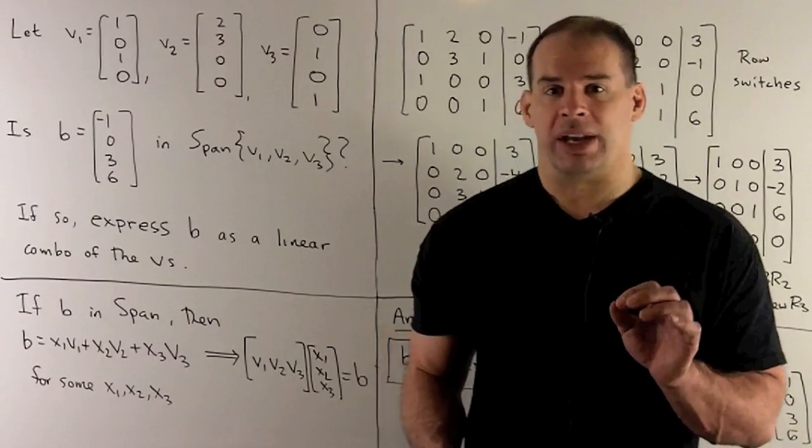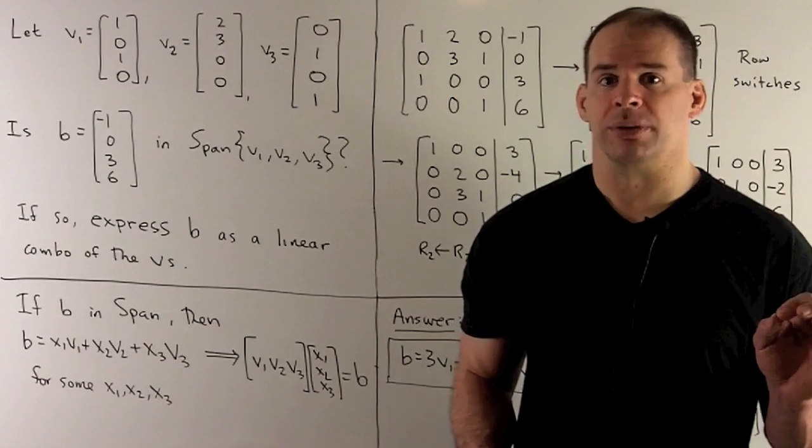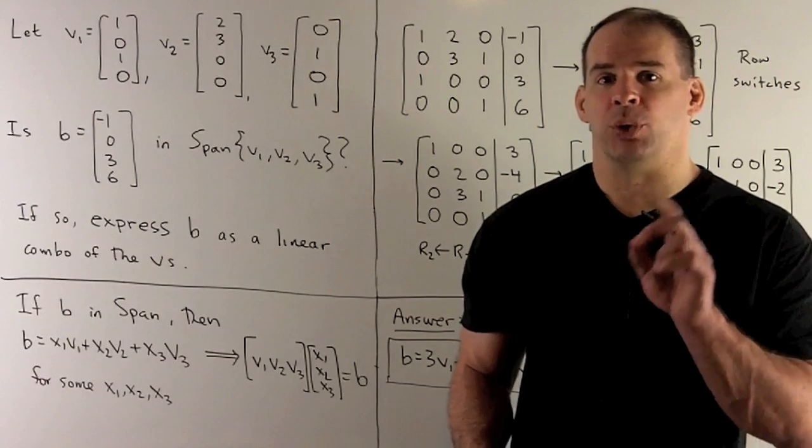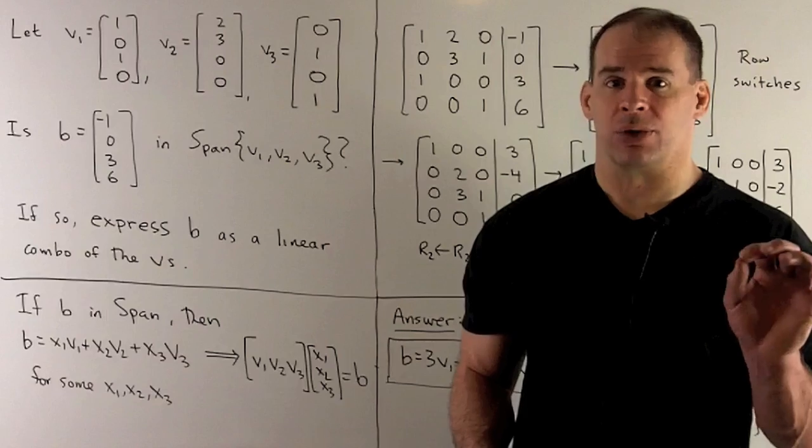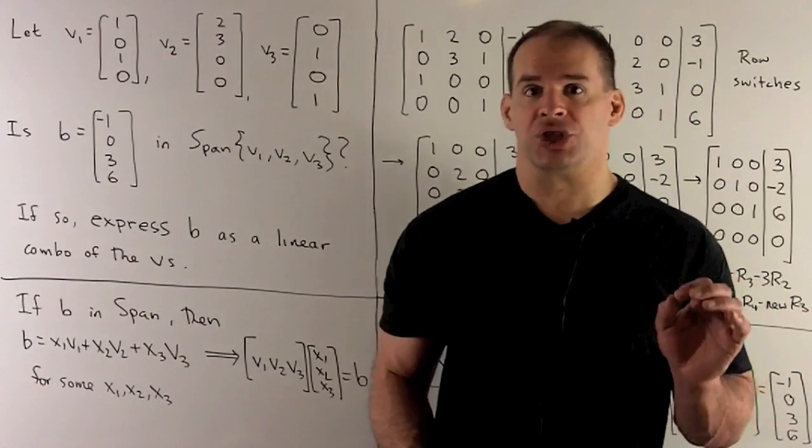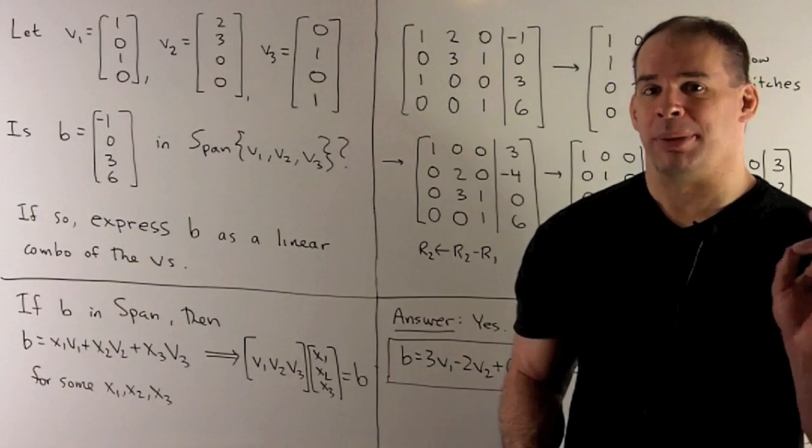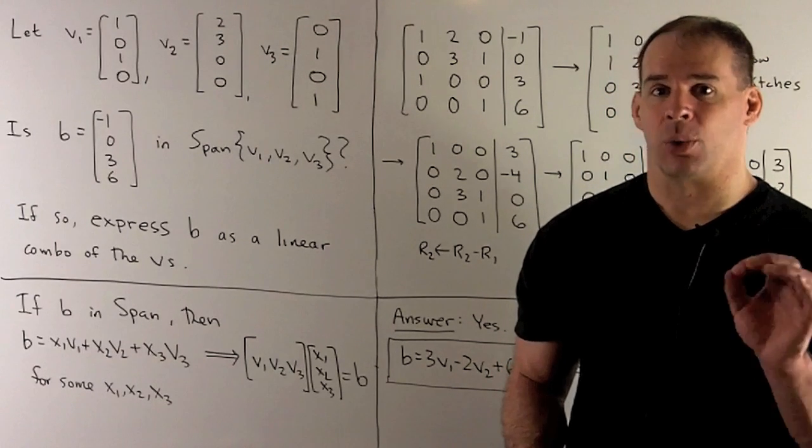Possibilities: we can have a unique solution, we can have many solutions, or we can have no solution. If we have unique or many solutions, there's at least one solution, that'll mean I can write b as a linear combination. If we get no solutions, that means b is not a linear combination, and so we're not in the span.